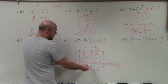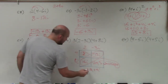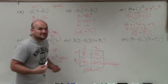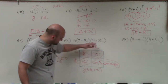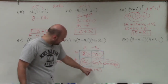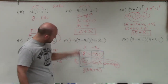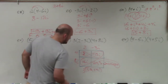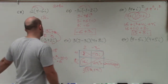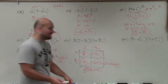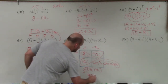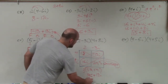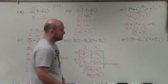Distributing the 3: 3 times 32 is 96, and 3 times 4i is 12i. So the final answer is 96 plus 12i.